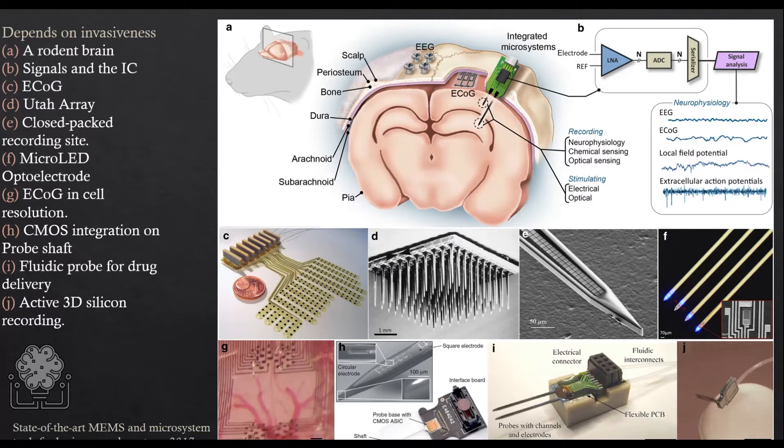In this picture all of them are summarized. We have a brain of a mouse here and as you can see there are different types of signals that we can get from them and different types of electrodes that can be connected to the brain.